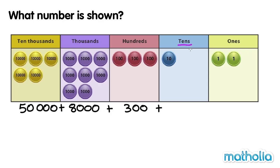In the tens place, there is one counter. It has a value of 10. In the ones place, there are two counters. They have a value of 2.